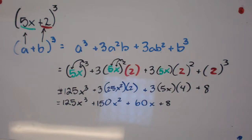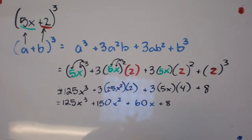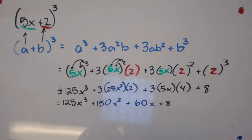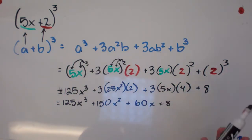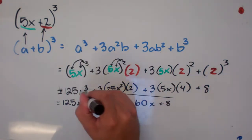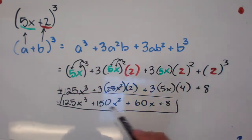So our answer is 125x cubed plus 150x squared plus 60x plus eight. When you simplify, make sure your x terms are in decreasing order by exponent — x to the third, x squared, x to the first, and x to the zero. This is in the correct order. This is our binomial fully expanded and simplified to the third power, since there are no more like terms.